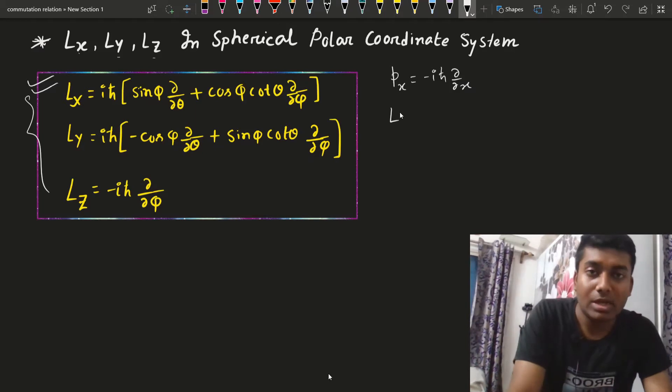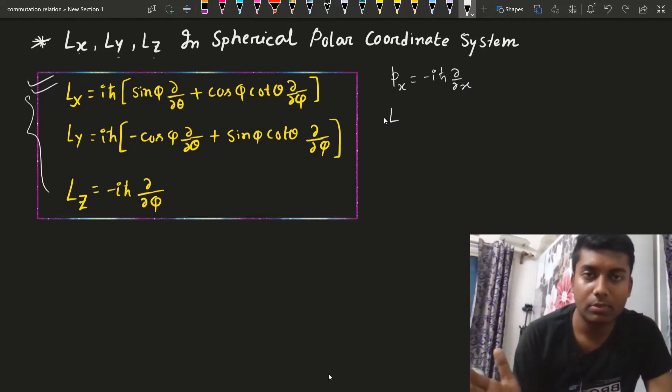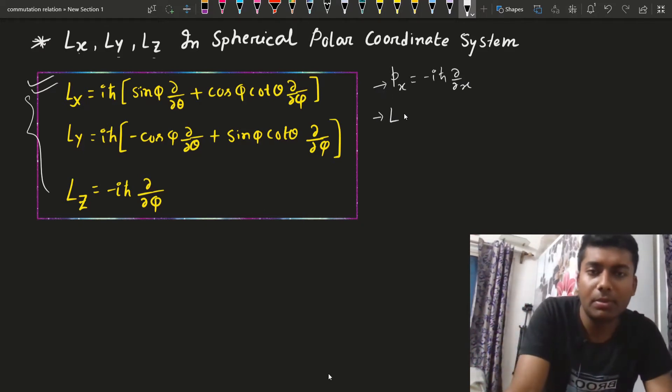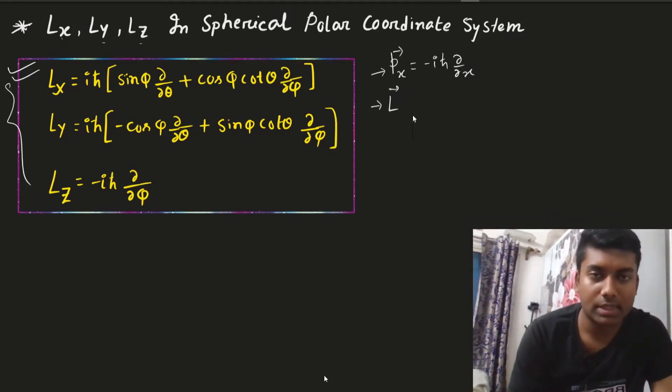Now what is L? The angular momentum. We know that there is two type of momentum. One is linear momentum which is this and another is angular momentum which is this. Now angular momentum L is in classical mechanics but these are vectors. L vector is equals to R cross P.